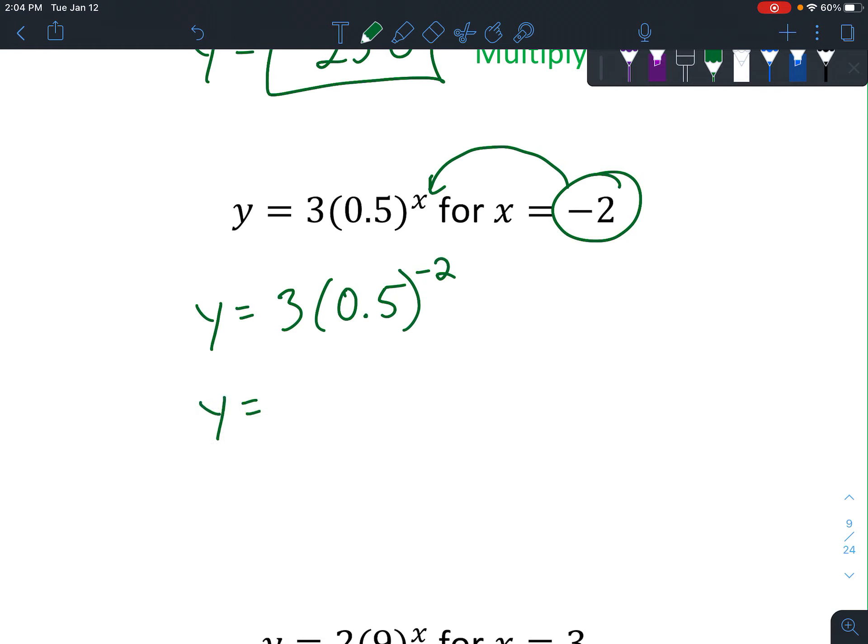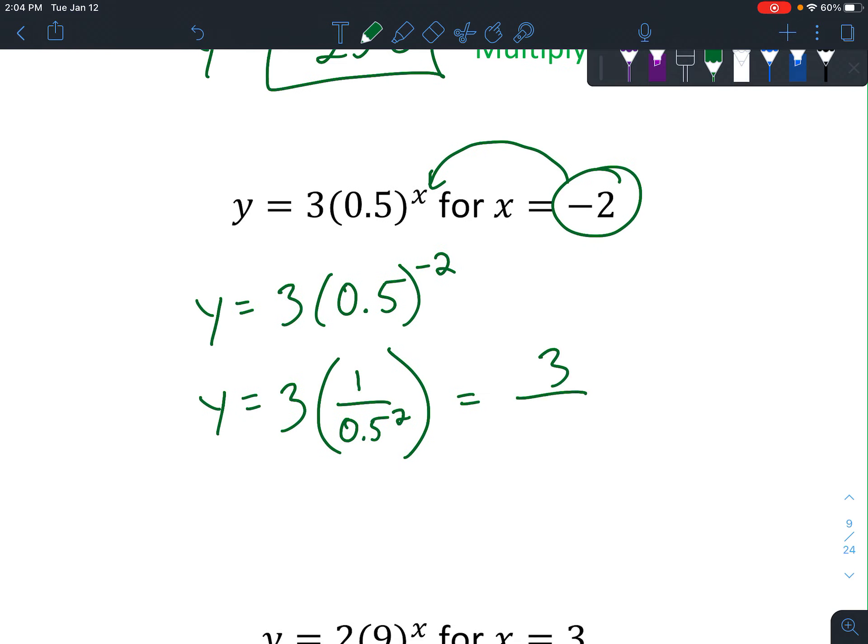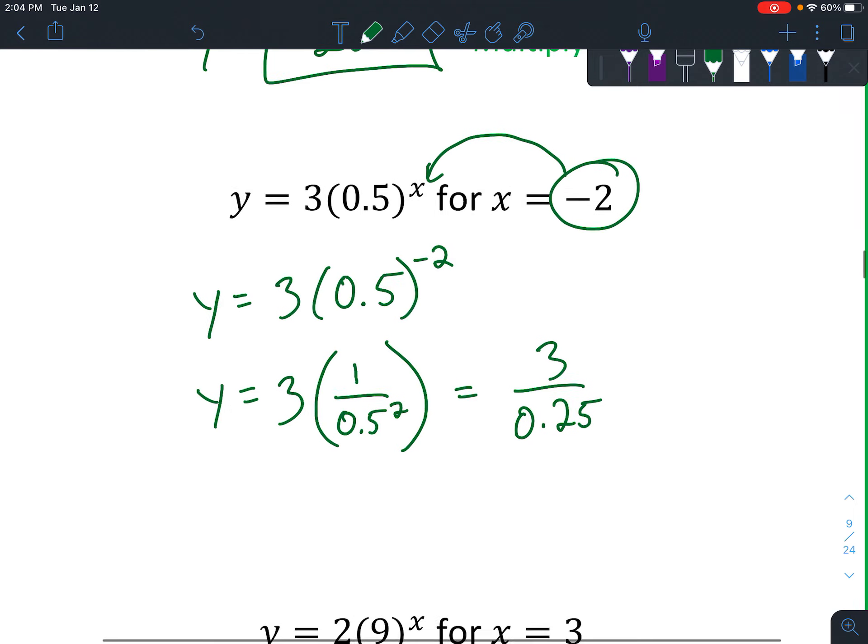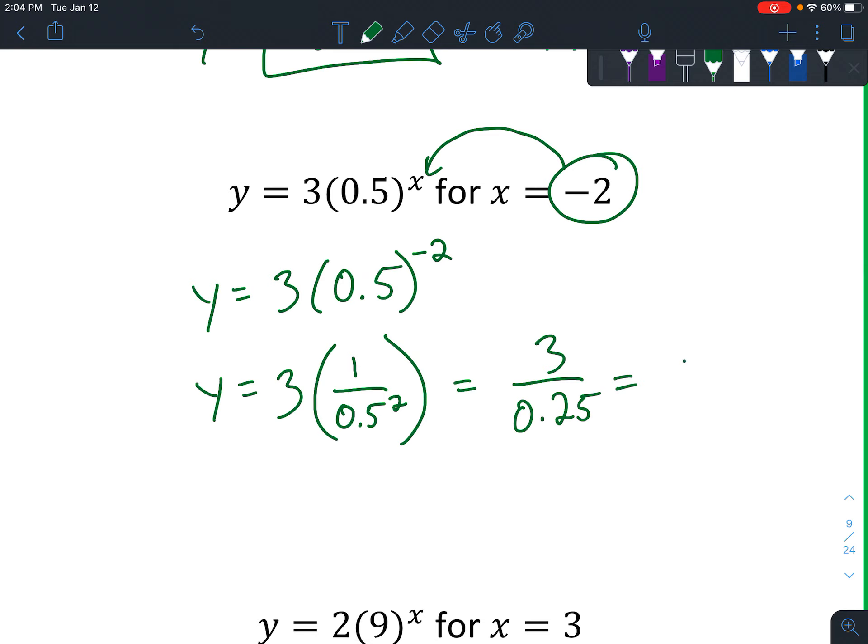And keep in mind, remember when anything is a negative exponent, this will end up being the same as 3. Well, I don't want to do too many steps in my head. So 3 times 1 over 0.5 squared, like that, which is really the same as 3 over 0.5 squared is going to be 0.25. So you can evaluate that, and when you divide, you get 12.